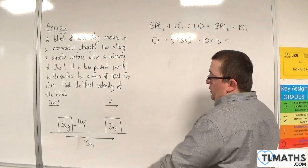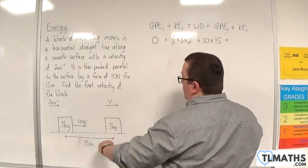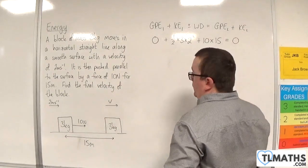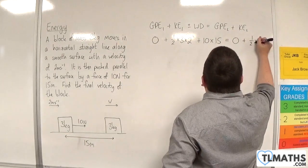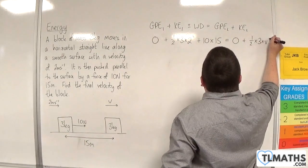The final gravitational potential energy, well, it hasn't gone anywhere up or down. So that is zero. Plus one half times M times V squared.